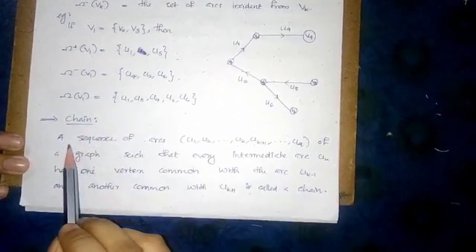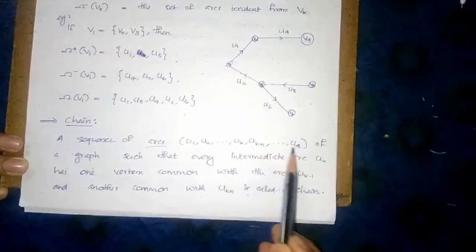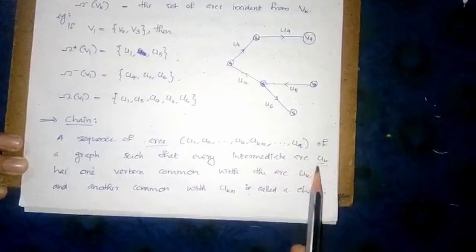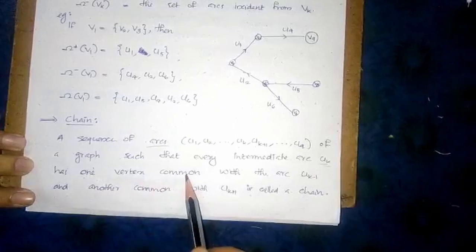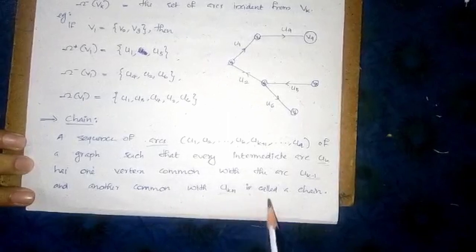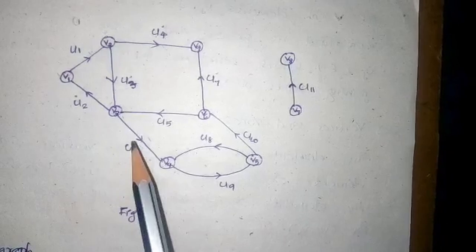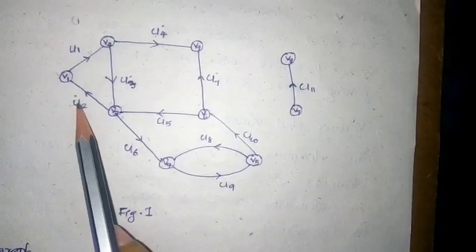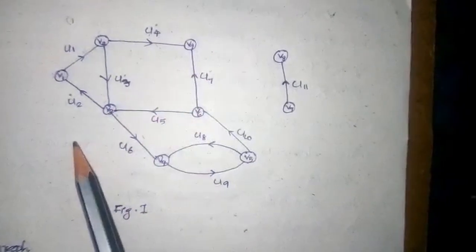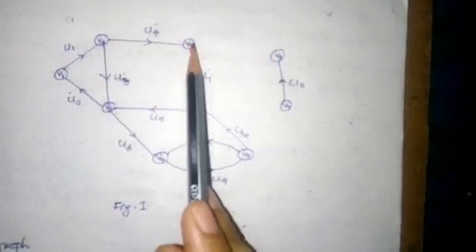Chain. A sequence of arcs U1, U2, ..., UK, UK+1, ..., UQ of a graph such that every intermediate arc UK has one vertex common with arc UK-1 and another common with UK+1 is called a chain. For example, the sequence U2, U3, U4, U7 forms a chain. It may also be denoted as the vertex sequence V1, V3, V2, V9, V6.